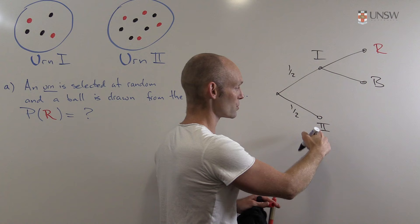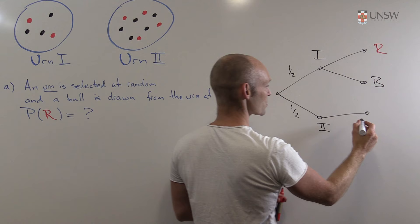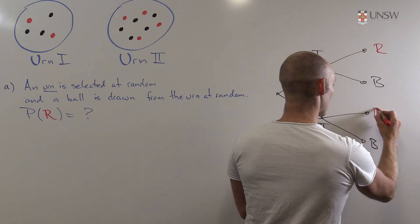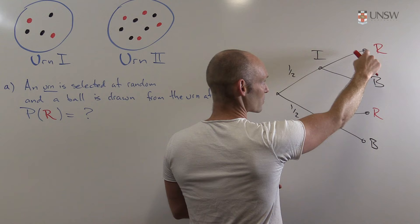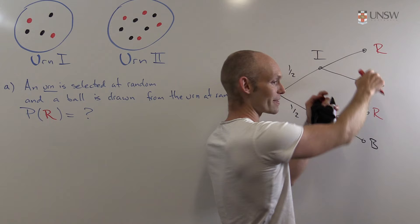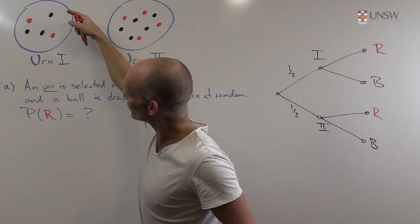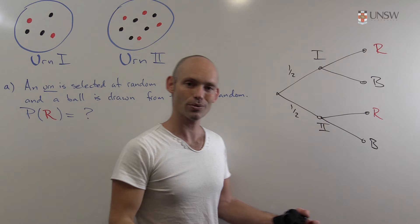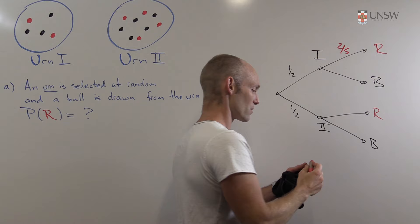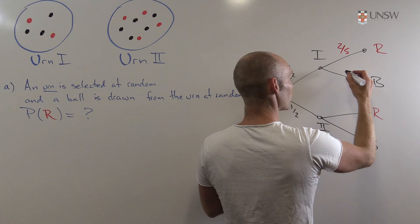Similarly, reaching into urn number two, we could also get a red ball or a black ball. Now, given that we chose urn one, what's the probability of drawing a red ball? There are five balls total in urn one, two of which are red, so the probability is 2/5. The remaining probability of drawing black is 3/5.